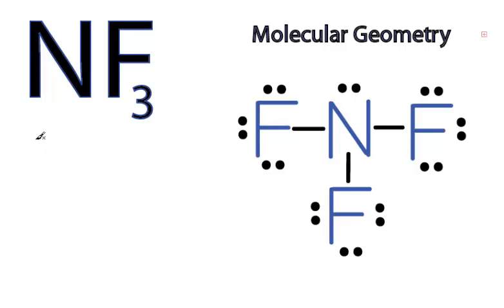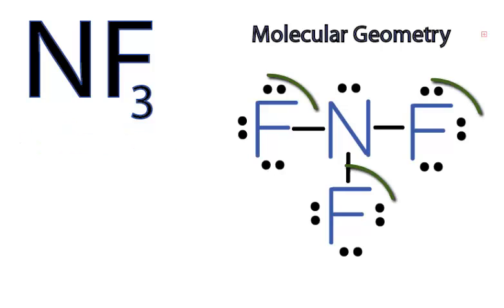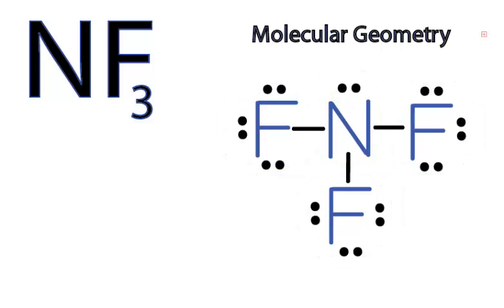For the molecular geometry of NF3, we'll first look at our Lewis structure here. You can see there are three fluorine atoms around the central nitrogen, and also, very importantly, there's a lone pair of electrons on top of the nitrogen. Those three atoms and that lone pair of electrons are going to repel each other, and that's what's going to give NF3 its molecular geometry.